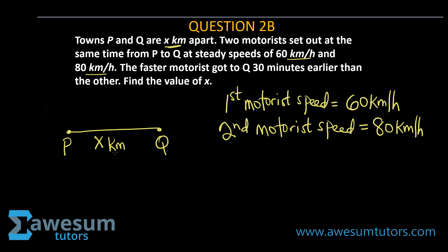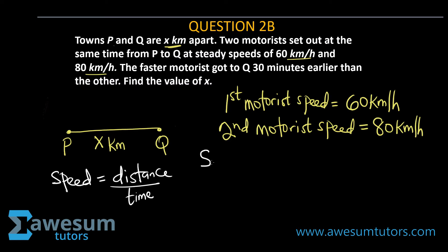We do not know the time it traveled, so the first thing we want to do is find the time. We know that the formula for speed is distance over time. If speed equals distance over time, I can make time the subject of the formula. That gives us t equals d over s — where d is distance and s is speed.